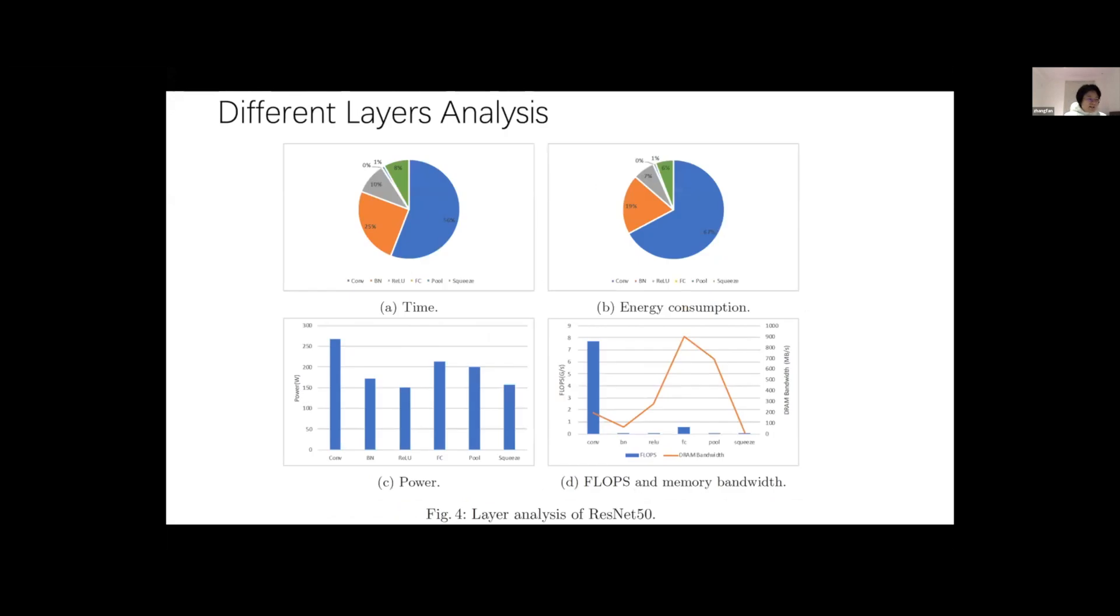Finally, to analyze energy efficiency at the layer level, we break down ResNet into layers. And we can see that the dominant layer of ResNet is convolution. And the average power of convolutional layer is also the largest because it is compute-bound, and the FLOPs is much larger than other layers.